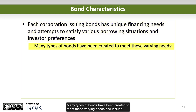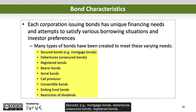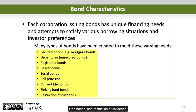Each corporation issuing bonds has unique financing needs and attempts to satisfy various borrowing situations and investor preferences. Many types of bonds have been created to meet these varying needs and include: secured bonds (e.g., mortgage bonds), debentures, unsecured bonds, registered bonds, bearer bonds, serial bonds, call provision, convertible bonds, sinking fund bonds, and restriction of dividends.